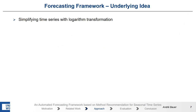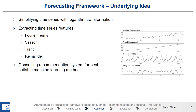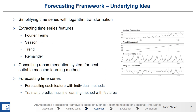The high-level steps of our forecasting framework are as follows. First, we simplify the time-series with a logarithm function. Then we extract features of the time-series like Fourier terms, and we decompose the time-series into its components: trend, season, and remainder. Then we calculate characteristics like the mean of the time-series, and consult the recommendation system that gives us the best machine-learning methods. Then we forecast each feature with individual methods — like the trend with ARIMA — and then we train the machine-learning methods and predict the future forecast with the forecasted features.